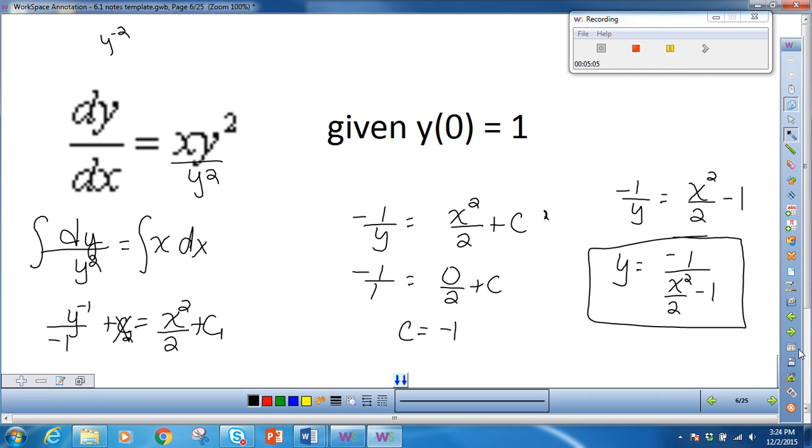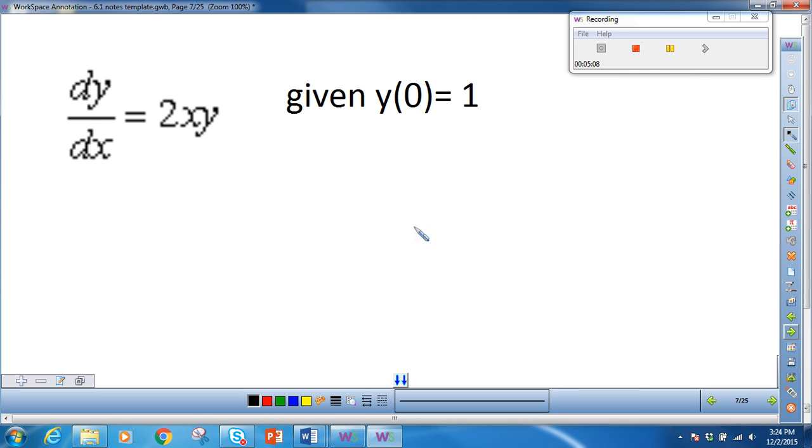So basically, we integrate both sides, and we remember c. So we start by separating our variables. The y will go to the other side, and the x will come here. So I get dy over y is equal to 2x dx.